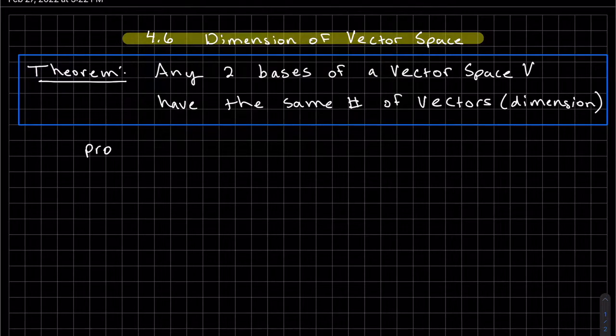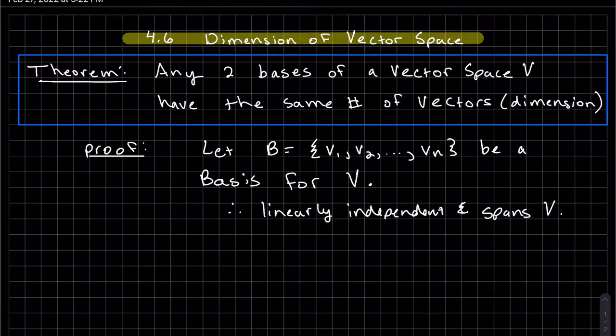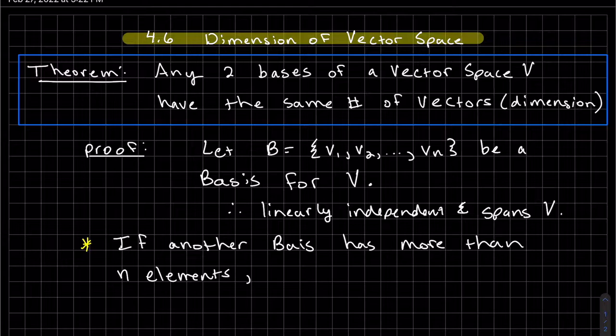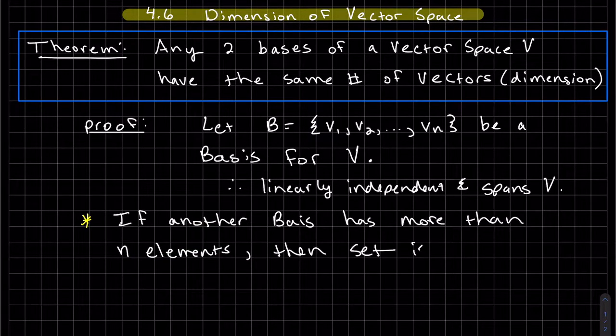Here's the proof of that. We're going to let b from v1 to vn be a basis for v. So we know it's linearly independent and spans v. If another basis has more than n elements, then the set is not independent, which would be a contradiction, and so therefore it doesn't have more than n elements.